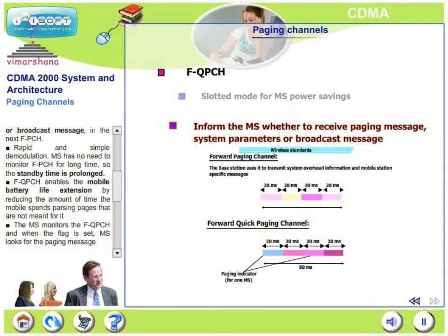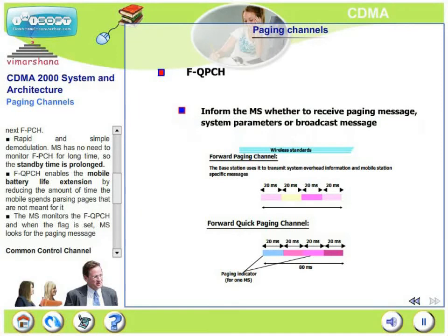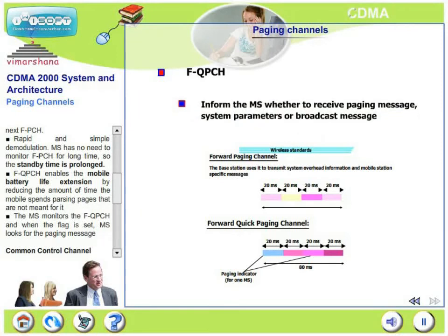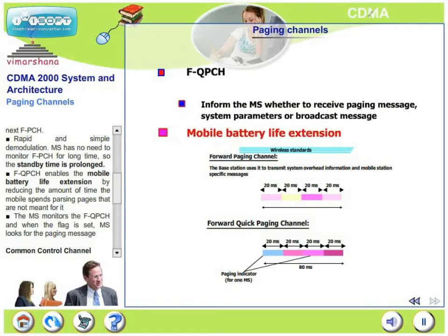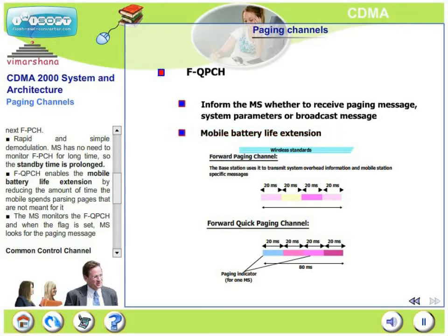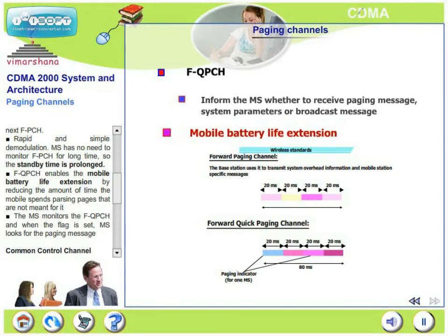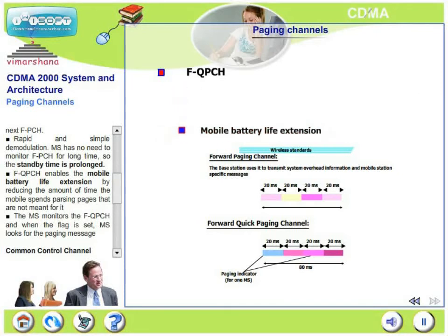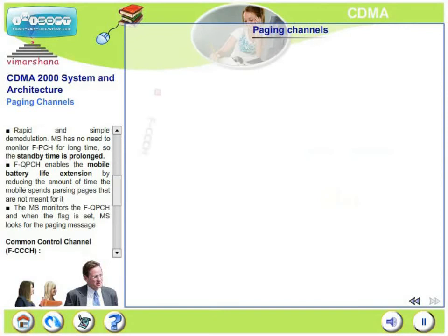Rapid and simple demodulation means the mobile has no need to monitor the paging channel for a long time, so the standby time is prolonged. QPCH enables mobile battery life extension. The mobile monitors the QPCH and when the flag is set, the mobile looks for the paging message; otherwise, it just goes to sleep.